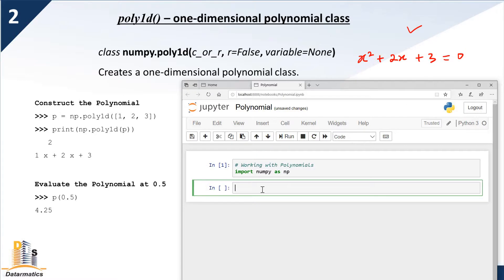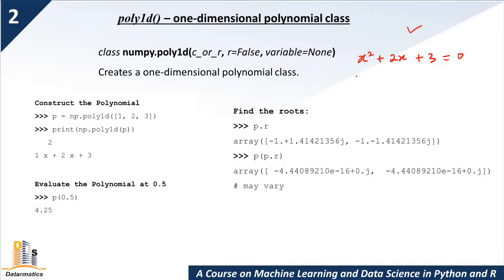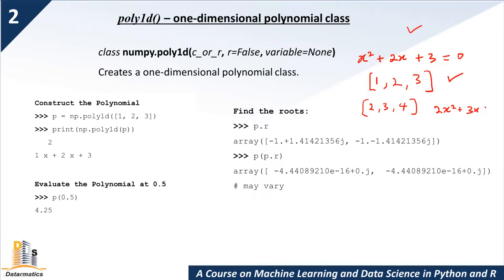The first thing we want to do is to construct a polynomial. Given this polynomial, it will be equivalent to a one-dimensional array: [1, 2, 3]. Each time you have a polynomial, be able to extract the coefficients into an array. For example, if you are given [2, 3, 4], you can construct a polynomial of the form 2x squared plus 3x plus 4.